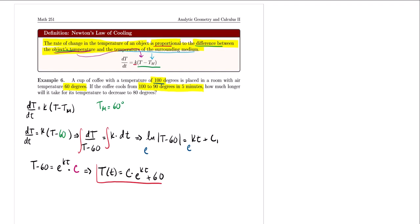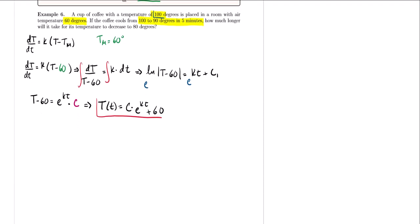Now we use the given information. The coffee started at 100 degrees, so at t = 0, T = 100. Plugging in: C·e^0 + 60 = 100, so C + 60 = 100, which gives us C = 40.